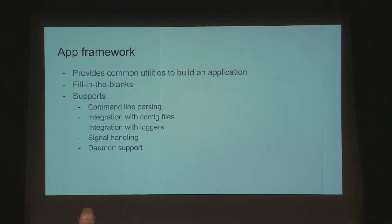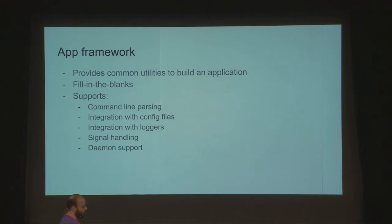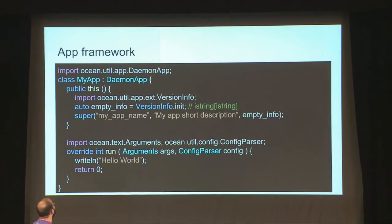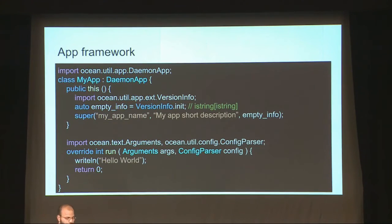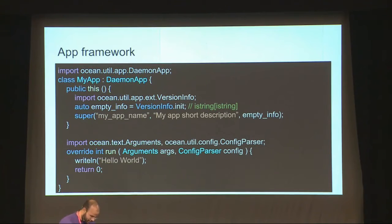Let's go to another component in Ocean: the app framework. It provides common utilities to build your application. It fills in the blanks to a large extent, so most of the stuff is done for you and you get a lot of freebies. It supports command line parsing, integration with config files and loggers, daemon support, and signal handling. Here's a minimal version: you inherit the daemon app, give it an app name, a description, and version information. The version information contains build information — which compiler was used, which libraries with which commits. You can automatically generate that, but that's out of scope today. Basically here you just get hello world.